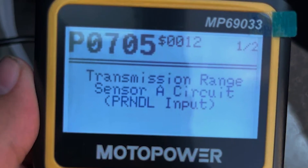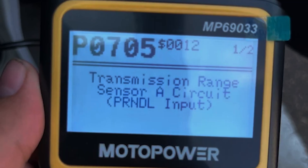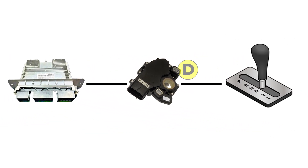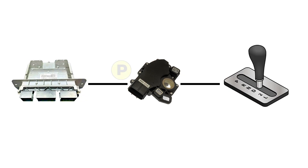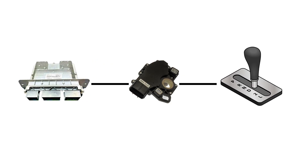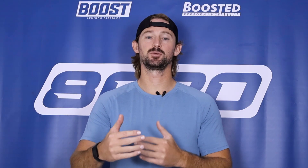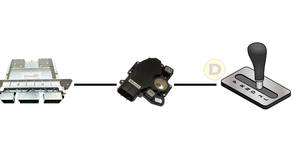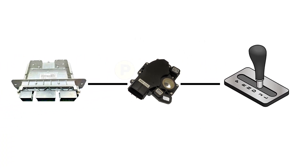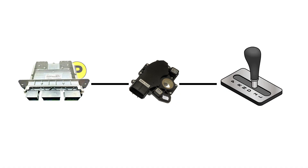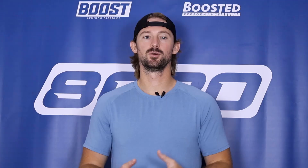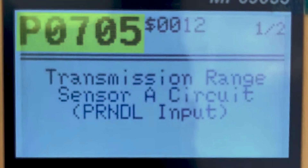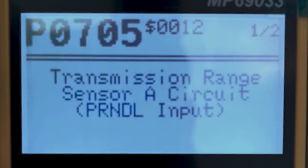When you get a P0705 fault code, essentially what that means is that this range sensor is sending a different signal back to the PCM relative to where the shift knob is actually positioned. You might be sitting in drive, but the sensor is sending a signal back to the PCM saying that you're in park. And when something like that happens, that's when a P0705 fault code gets set off.